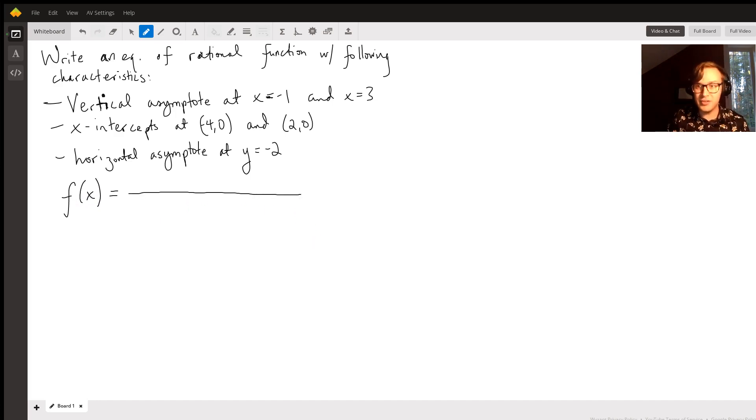Because it's a rational function, it's going to be a fraction where there's a polynomial on the top and a polynomial on the bottom. That's what a rational function is. So I'm just going to put this big fraction bar, so we're ready for that.